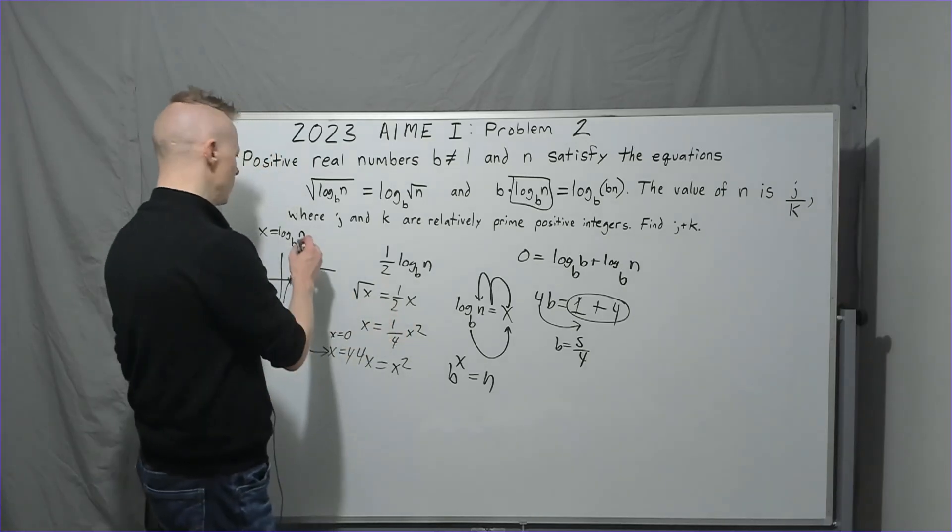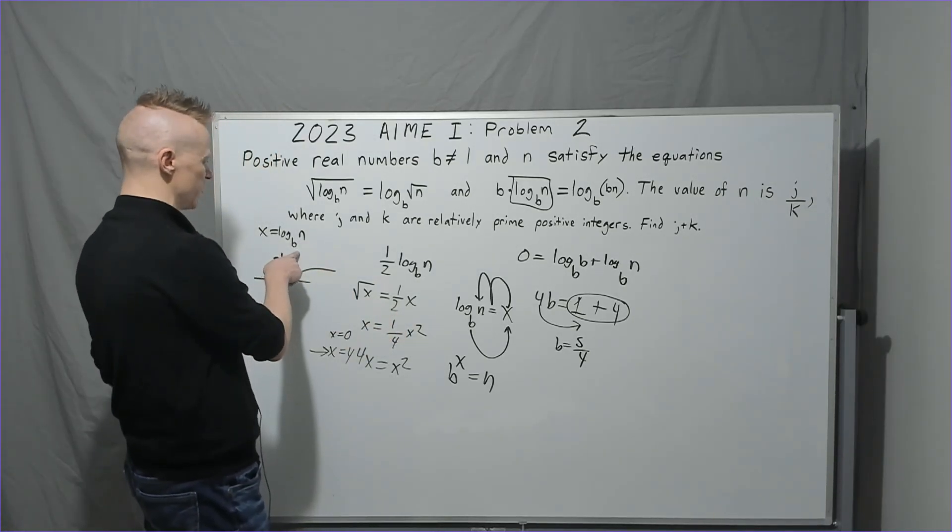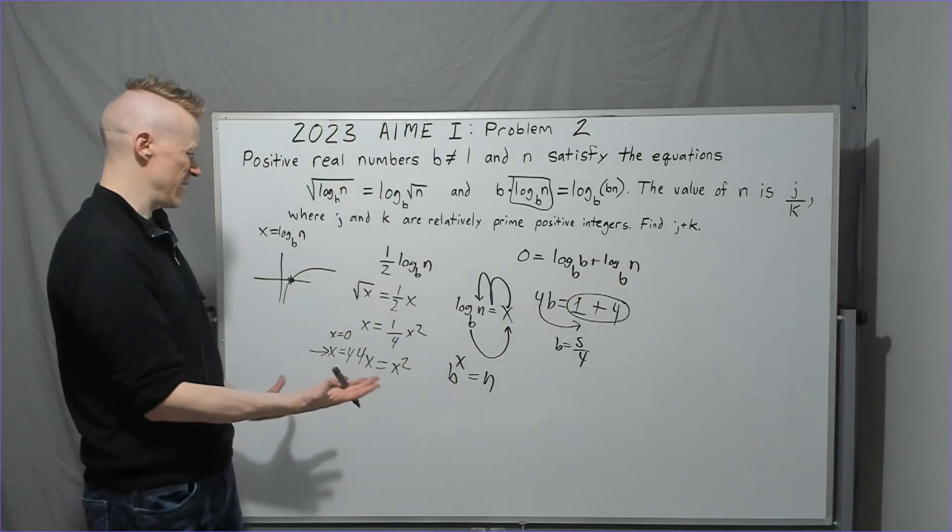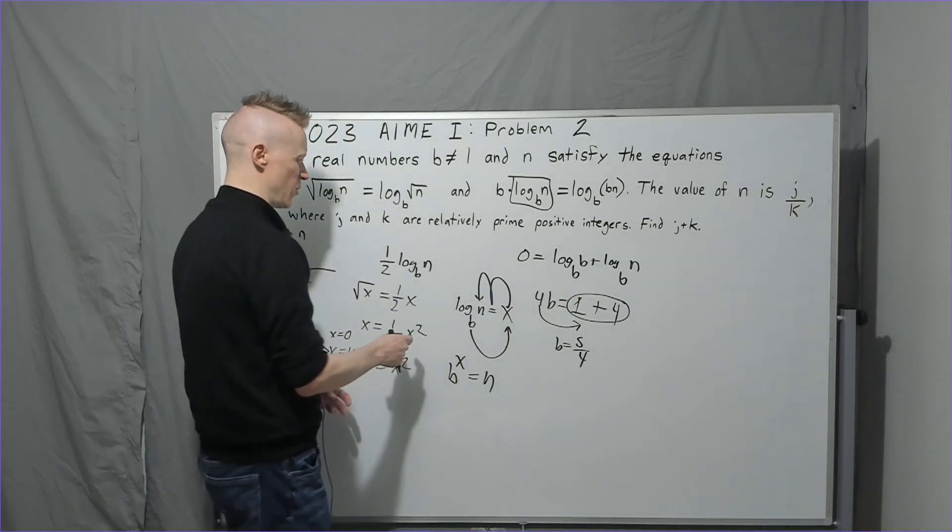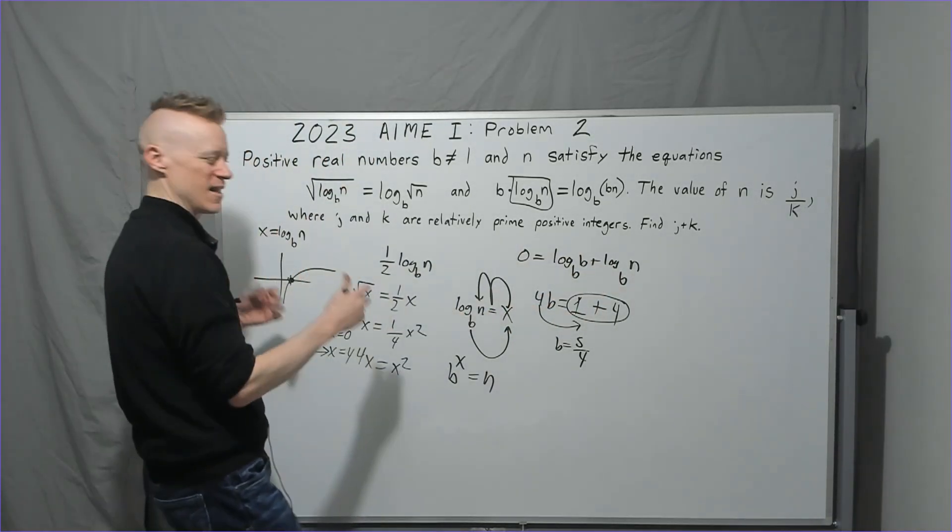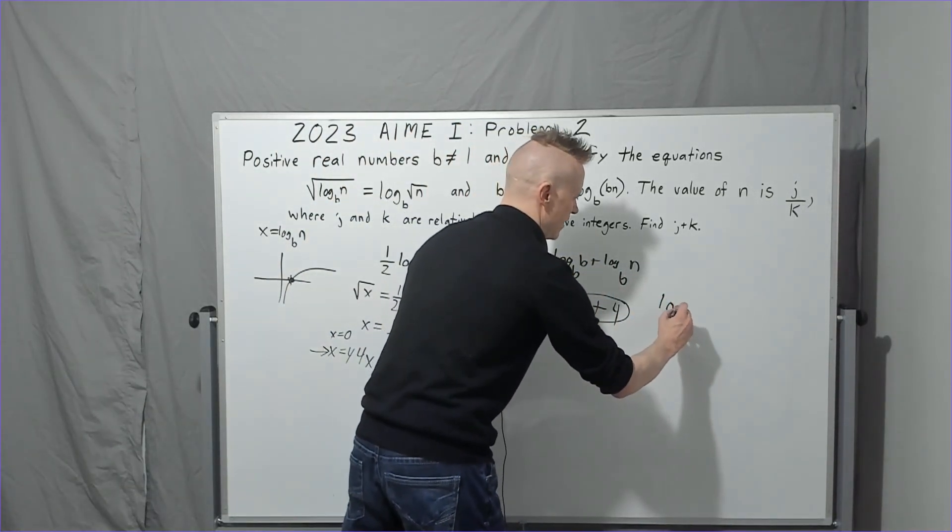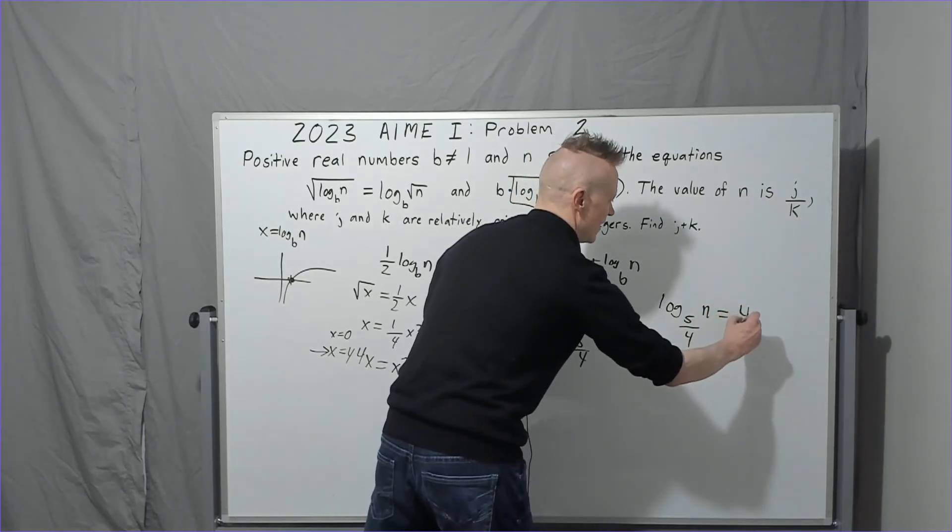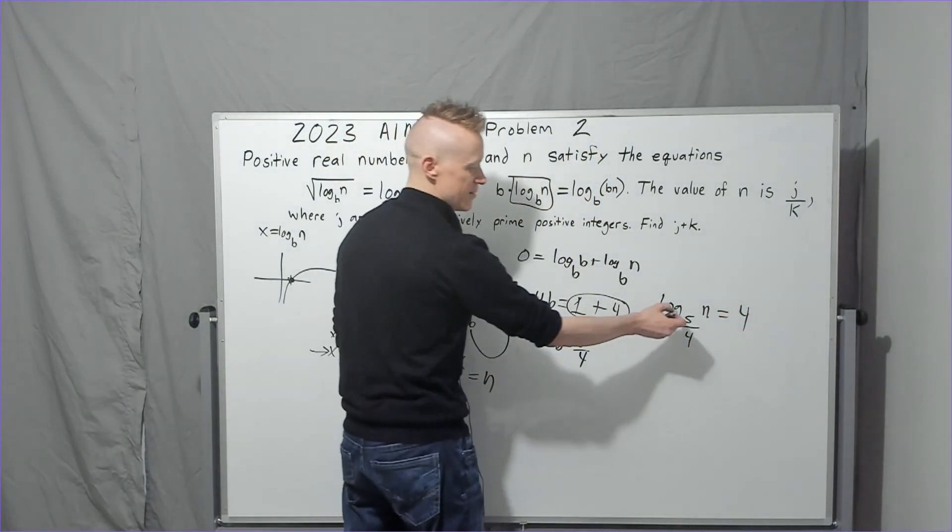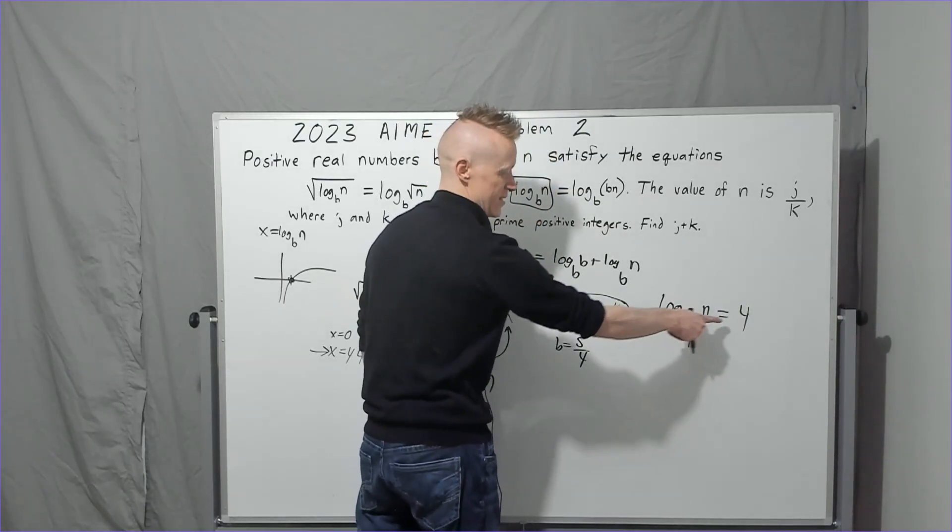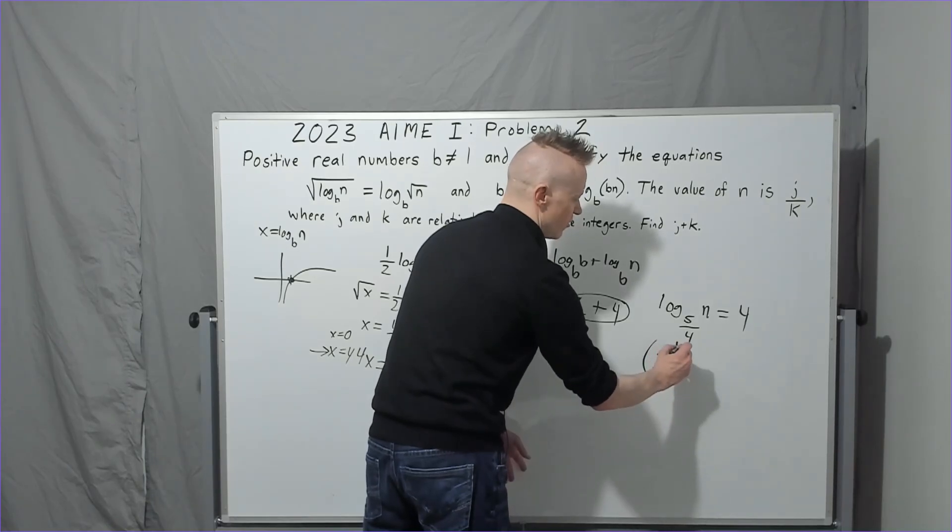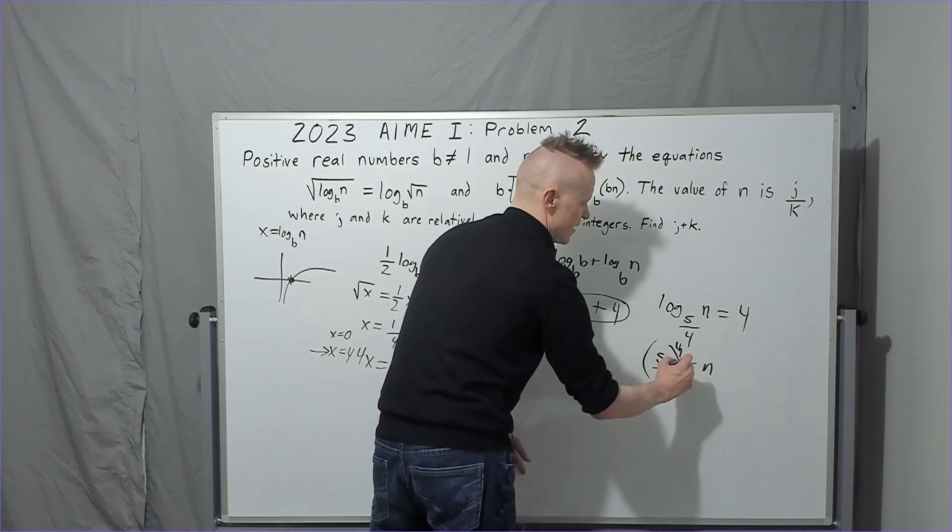So we're going to have to go back and figure out how we're going to do this. Probably... well, b is 5 over 4. We know what log base b of n is, though. We know log base b of n is 4. So we could just use that one or this one either way, and it would now be log base 5 over 4 of n needs to equal 4. Again, smiley frog face says it's this to that power. So you're going to have 5 over 4 to the 4th power is going to equal n.